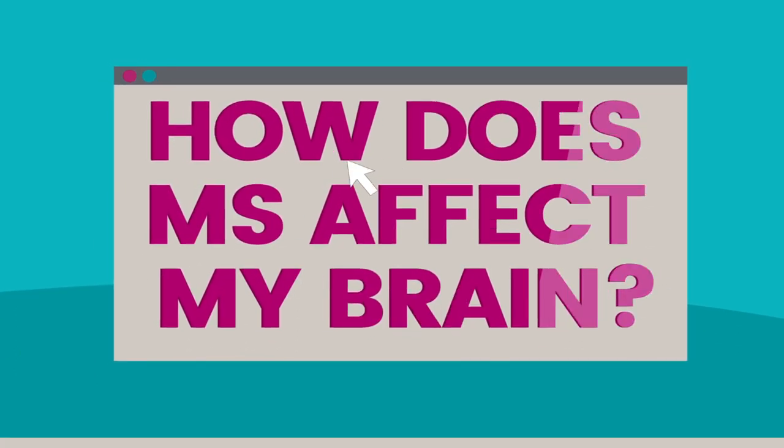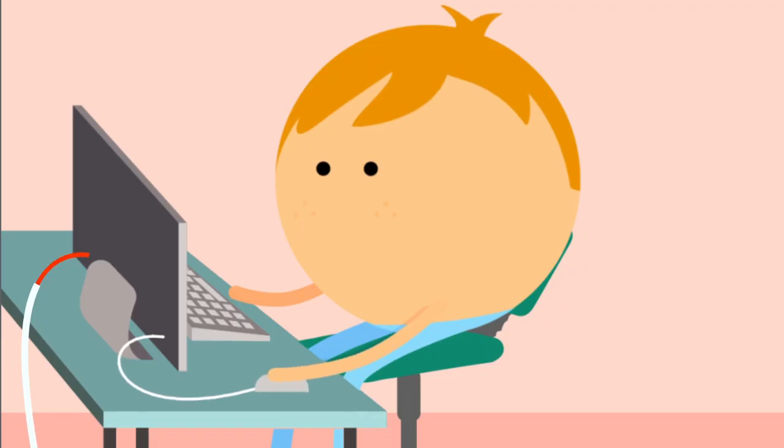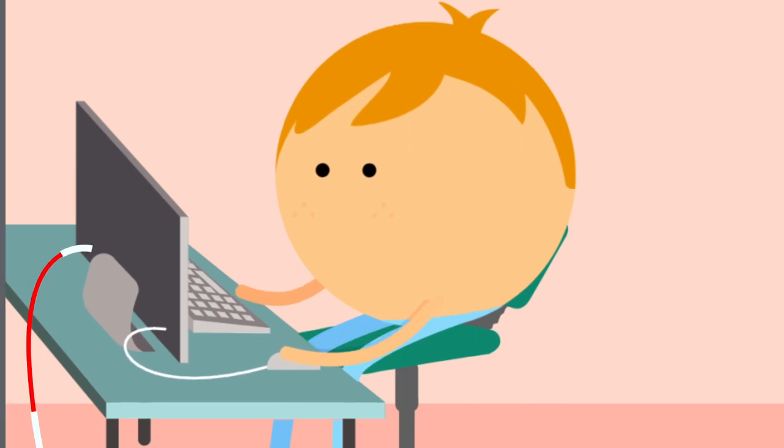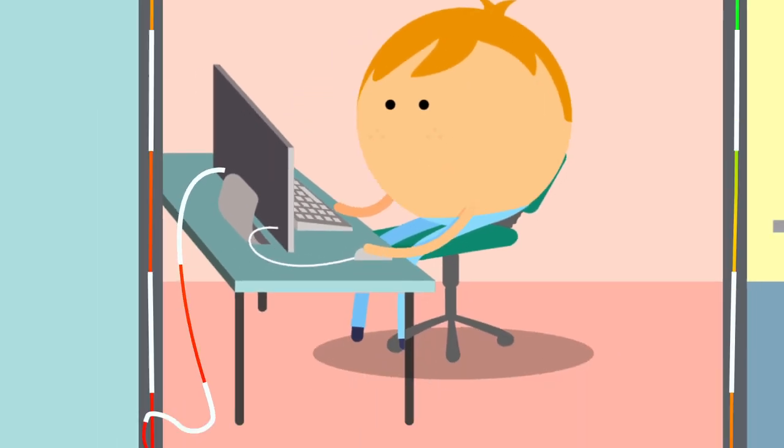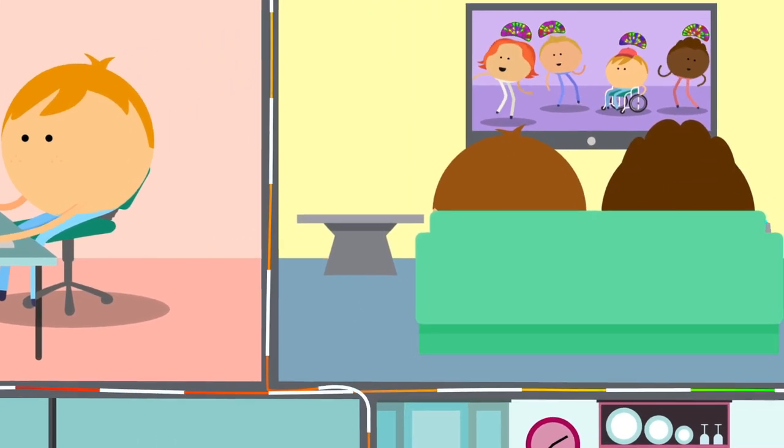How does MS affect my brain? Your brain communicates via electrical signals. Just like the electrical cables in your house, the wires in your brain need to be insulated.